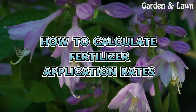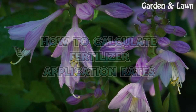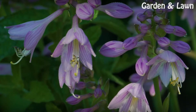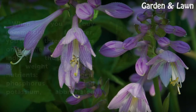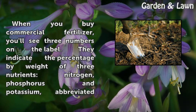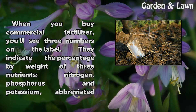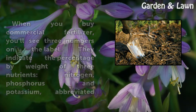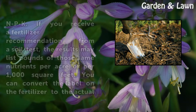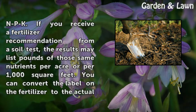How to calculate fertilizer application rates. When you buy commercial fertilizer, you'll see three numbers on the label. They indicate the percentage by weight of three nutrients: nitrogen, phosphorus, and potassium.